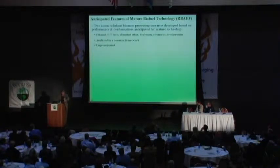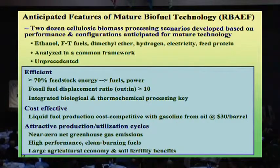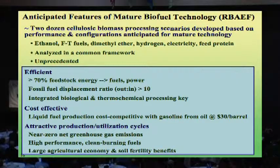Some anticipated features of mature technology across about two dozen scenarios with a broad range of products, analyzed in a common framework — something that hasn't been done before. Many of these scenarios are over 70% efficient in terms of fuels and power energy divided by feedstock energy. Very profoundly positive fossil fuel displacement ratio — output versus input — in fact a higher ratio than current petroleum processing. And integrated biological and thermochemical processing is key.